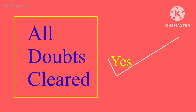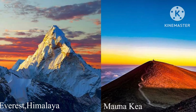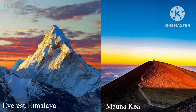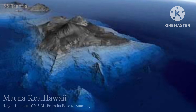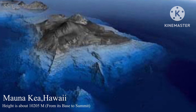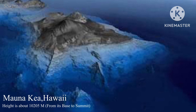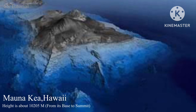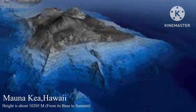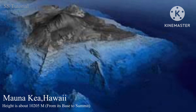So now your doubt must be clear: why Everest is considered the highest peak and Himalaya the tallest mountain of the earth, and not Mauna Kea. But if we take the actual height of Mauna Kea from its base to summit, then it would be the tallest mountain of the world.